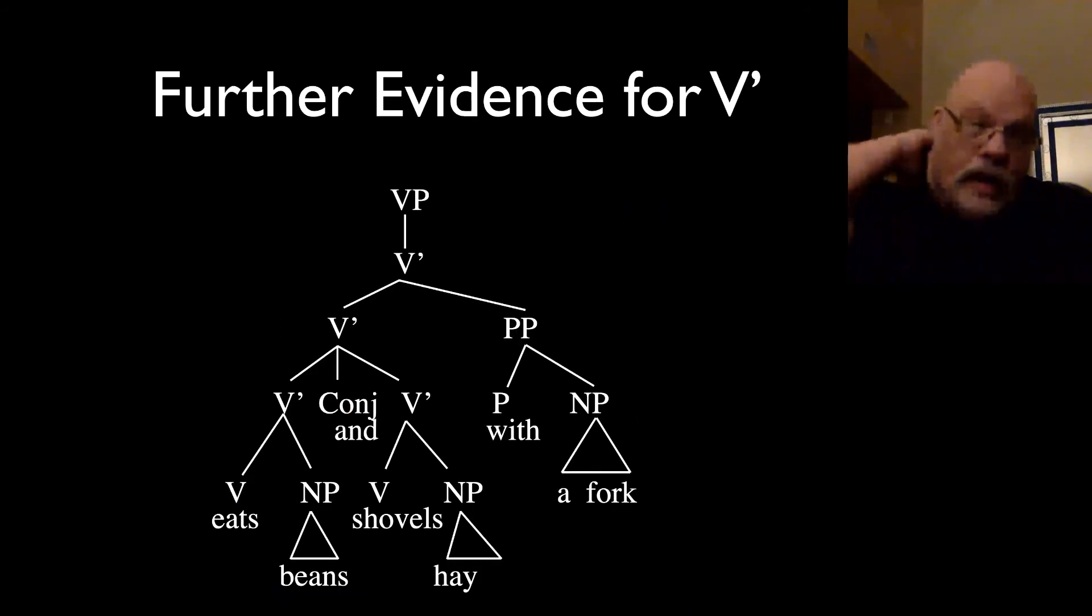Here's another example of evidence for V bar. Remember one of our constituency tests was coordination or conjunction. So if you can stick two things together, you know that they are a constituent. You can do this inside of verb phrases. So the prepositional phrase with a fork seems to modify the conjoined structure eats beans and shovels hay. At least that's one possible interpretation. There's also the interpretation where it's just shoveling hay with a fork, but there's also the interpretation where the fork is used to both eat beans and shovel hay. That's only possible to get that interpretation if you have a V bar category which can be conjoined together. And that conjoined element is modified by with a fork. And so that's additional evidence that we have these intermediate structures.